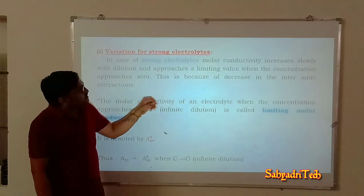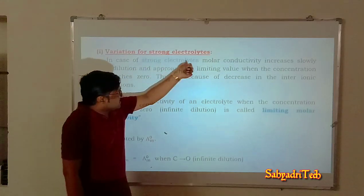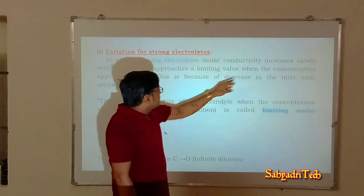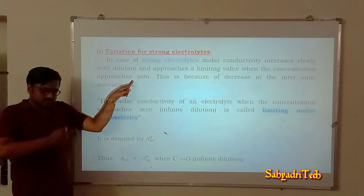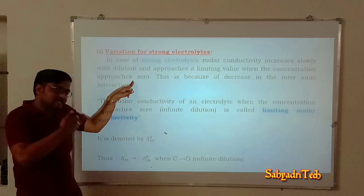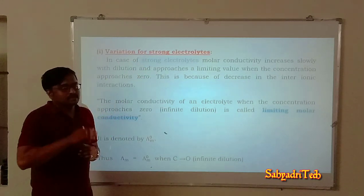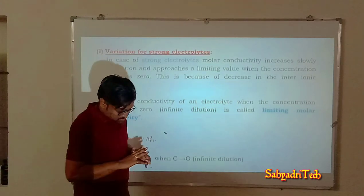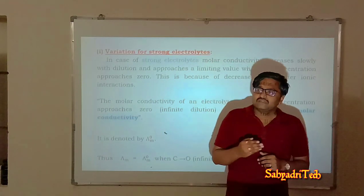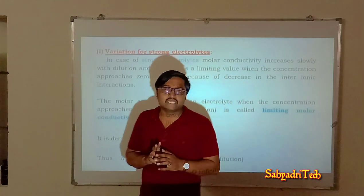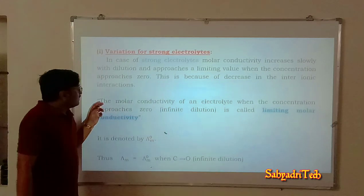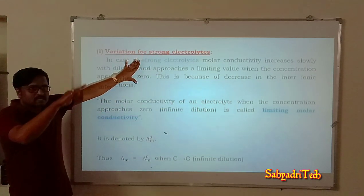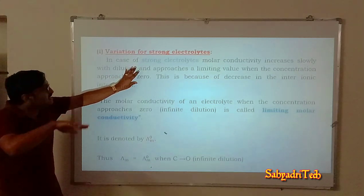In case of a strong electrolyte, molar conductivity increases slowly with dilution and approaches a limiting value when the concentration approaches to zero — that is, at infinite dilution. Till that point, molar conductivity goes on increasing. This is because of the decrease in inter-ionic interaction. So the reason for the increase in molar conductivity on dilution for a strong electrolyte is: decrease in inter-ionic interaction.